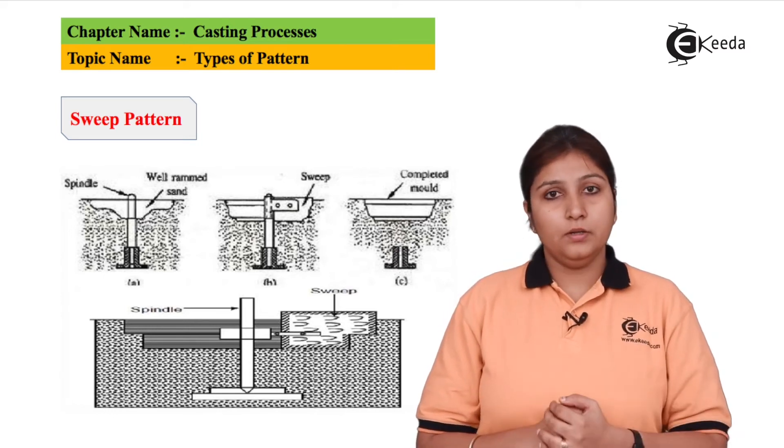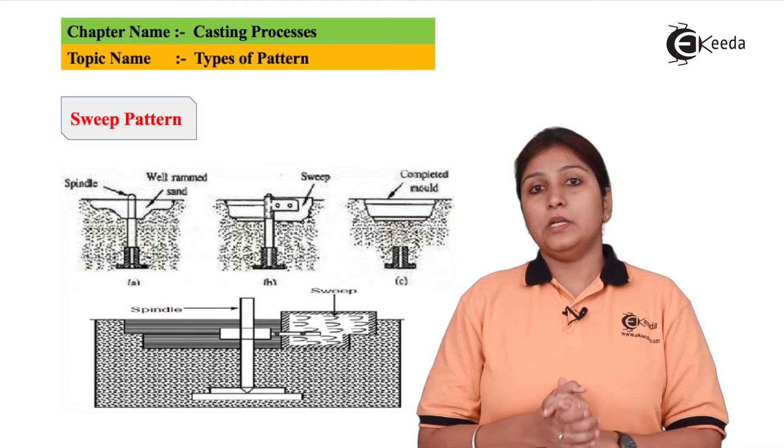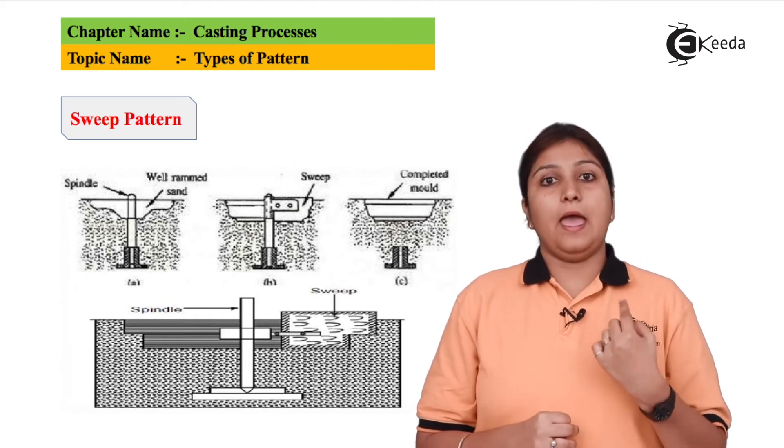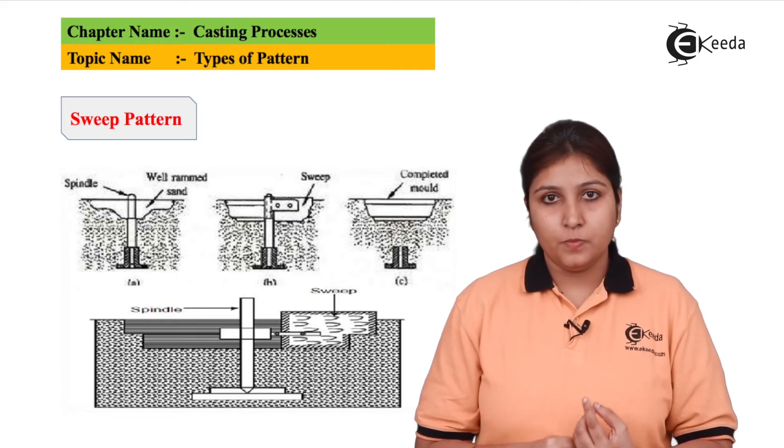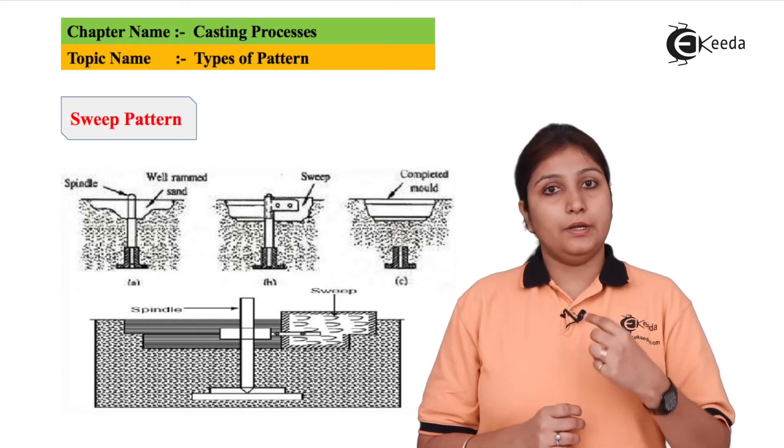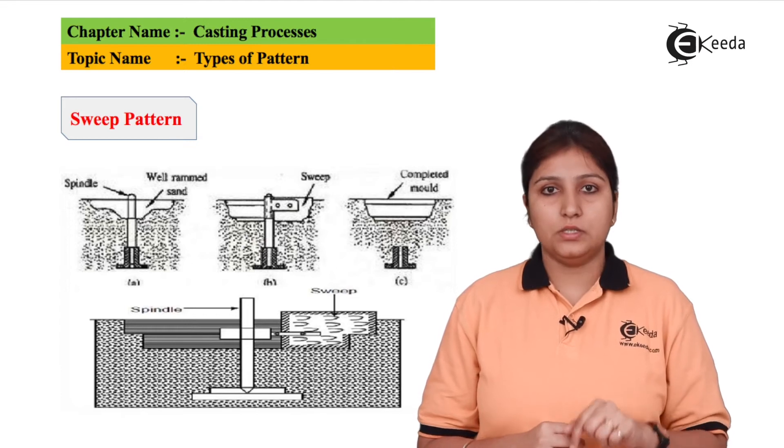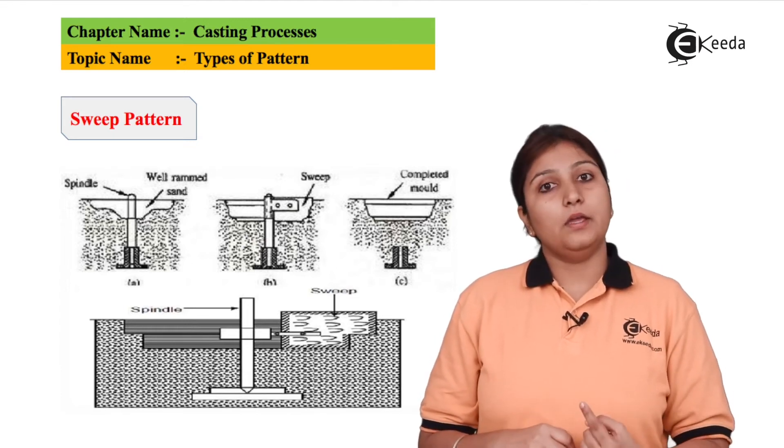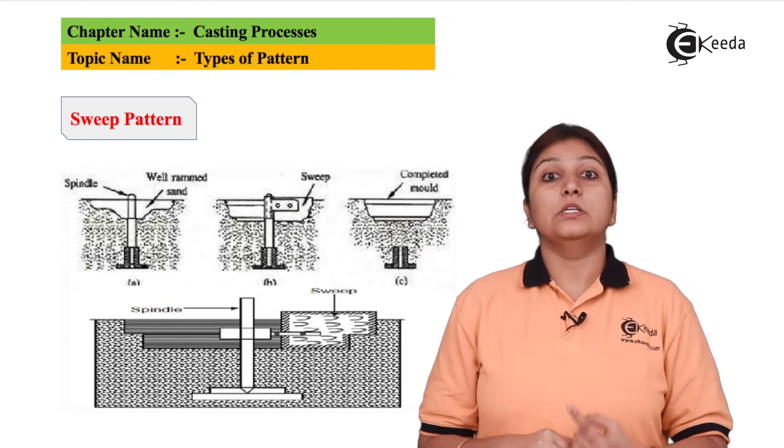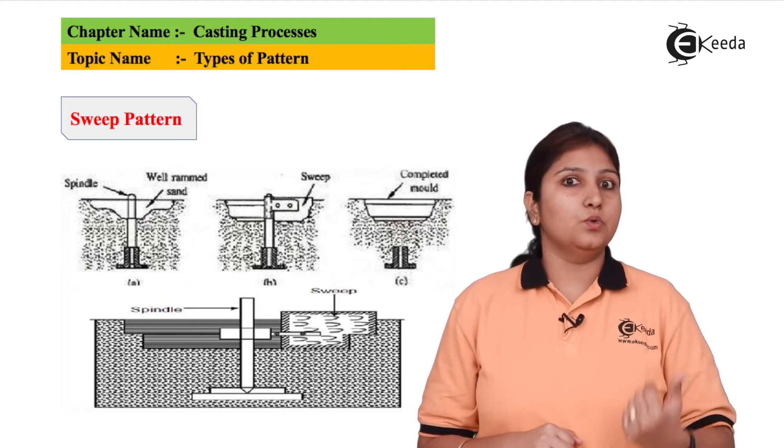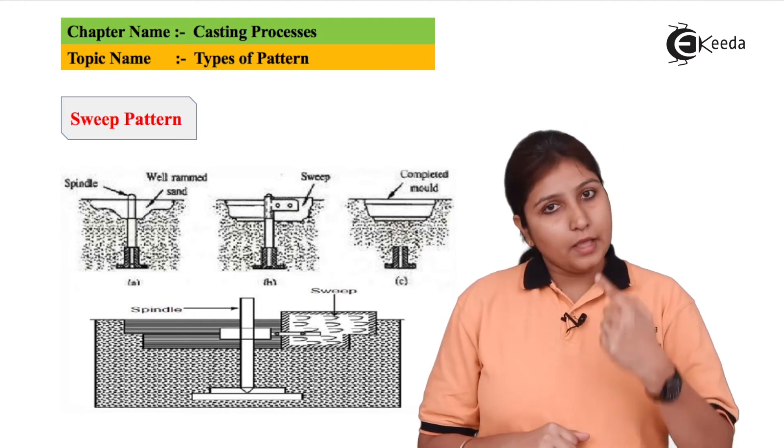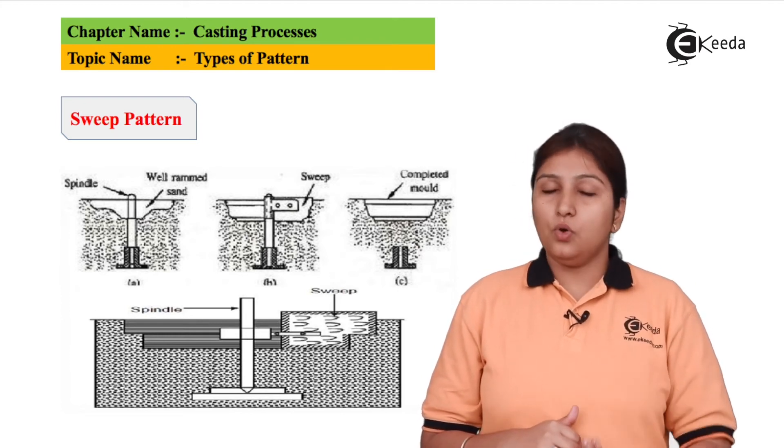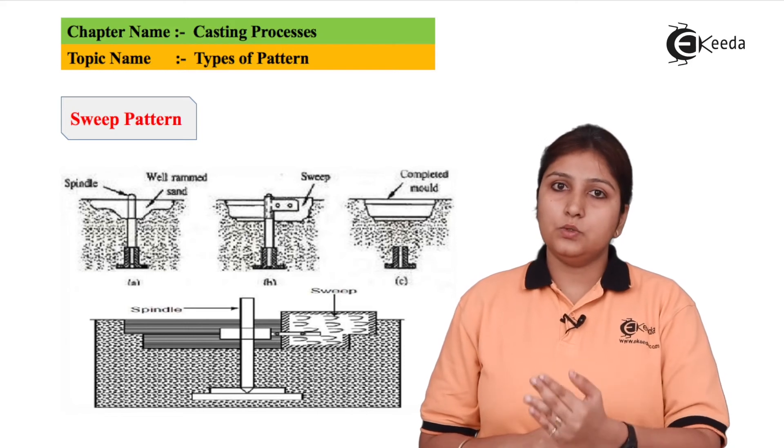So there is a spindle, there is a ram. So the material is poured and it goes down as the spindle rotates. It goes down, it fills the space which is down, the material is filled in the shape which is down by sweeping action of the spindle. That's why the pattern is known as sweep pattern and as the whole material settles, it sweeps and settles. So this pattern is known as sweep pattern.